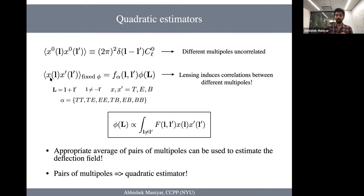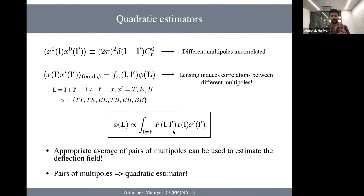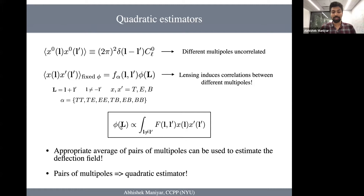Now if you look at this equation carefully, if I take the lensing response function to the other side of the equation, with some algebraic manipulation I'll get something where capital F are some weights. What this equation says is: if you take an average over pairs of multipoles weighted by some weights F, you can potentially reconstruct the lensing potential field. That is basically the quadratic estimator. It's called the quadratic estimator because two pairs of multipoles enter inside the estimator.